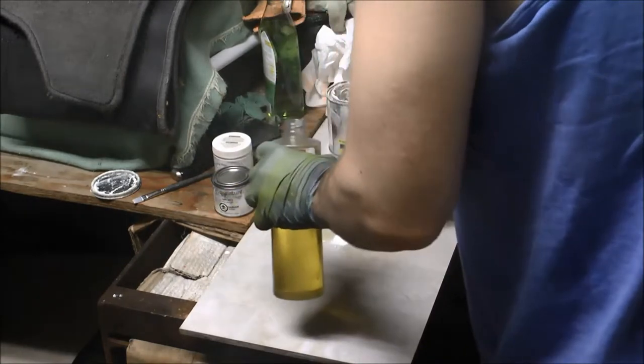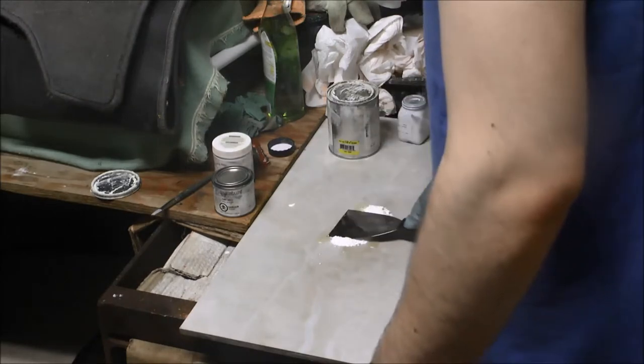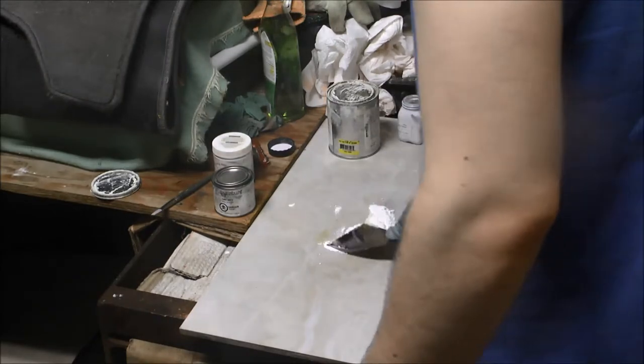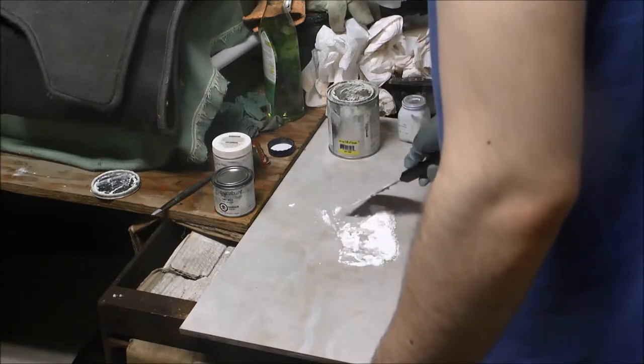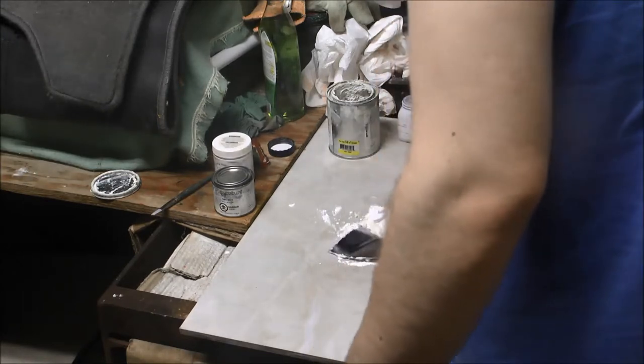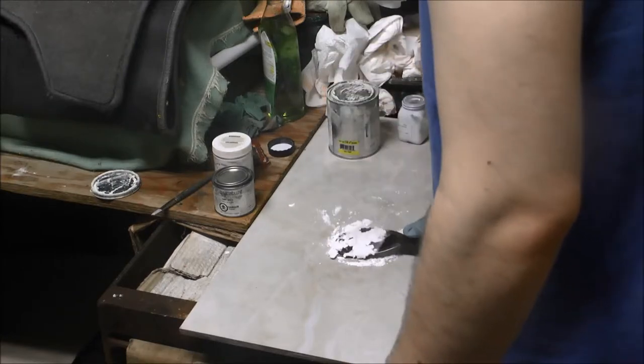So here you see I'm just mixing this batch up, and the eggshell white actually yellows when you add the oil to it because it's an inert pigment. So it's not really that recommended to be painted with. You can paint with it, but it's not very recommended.